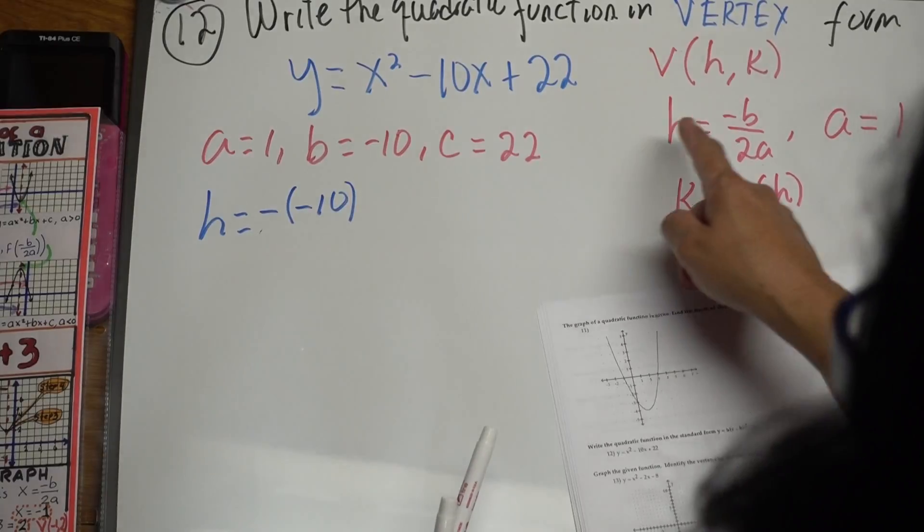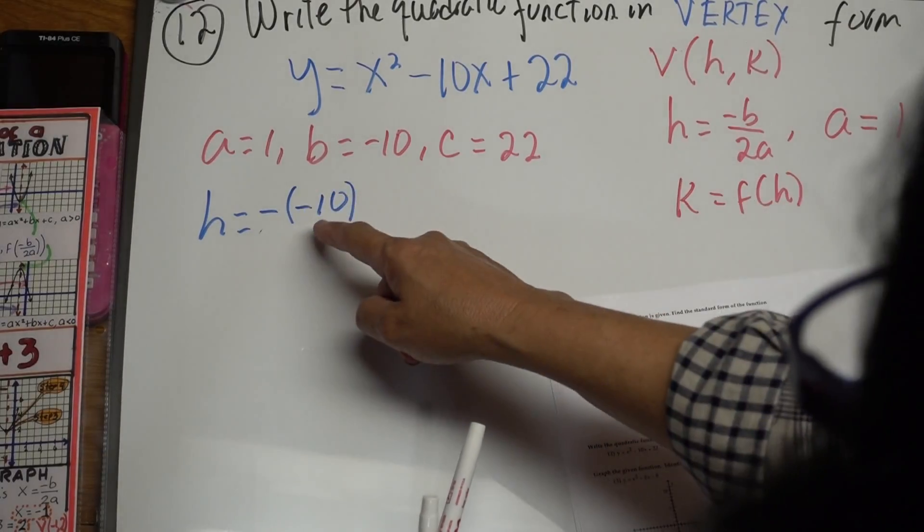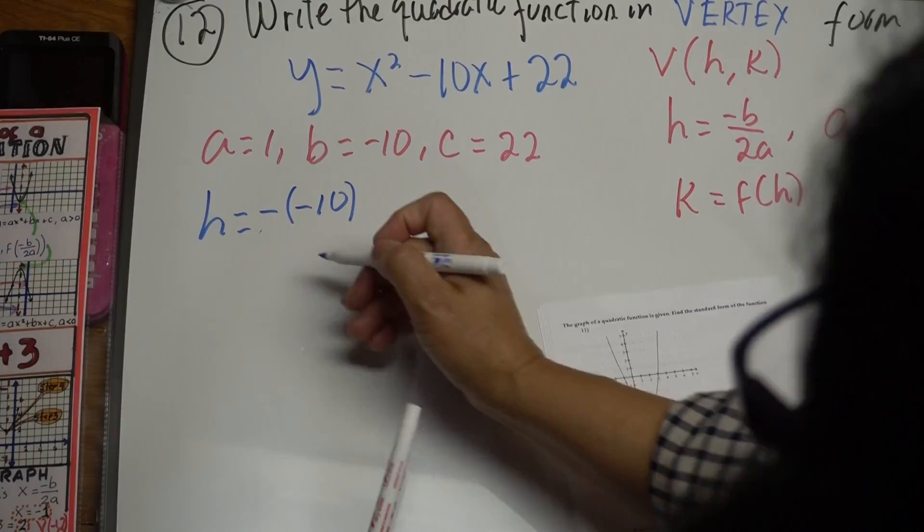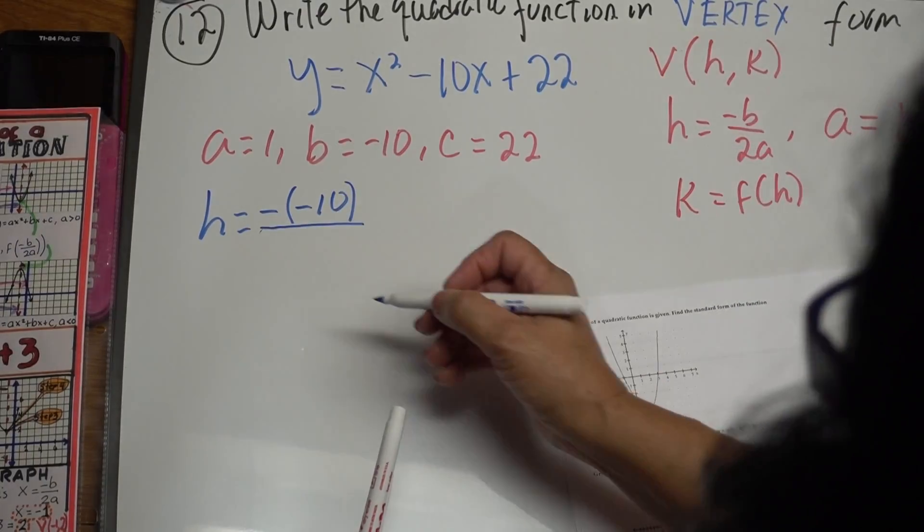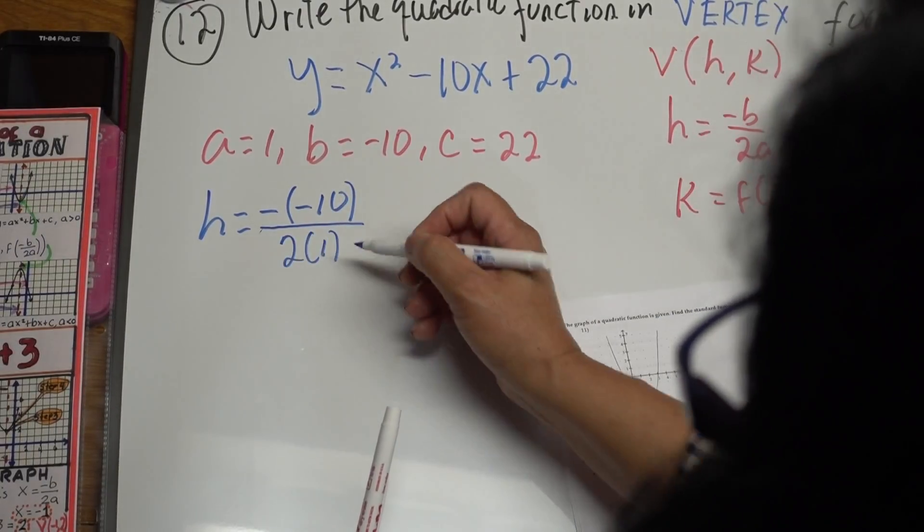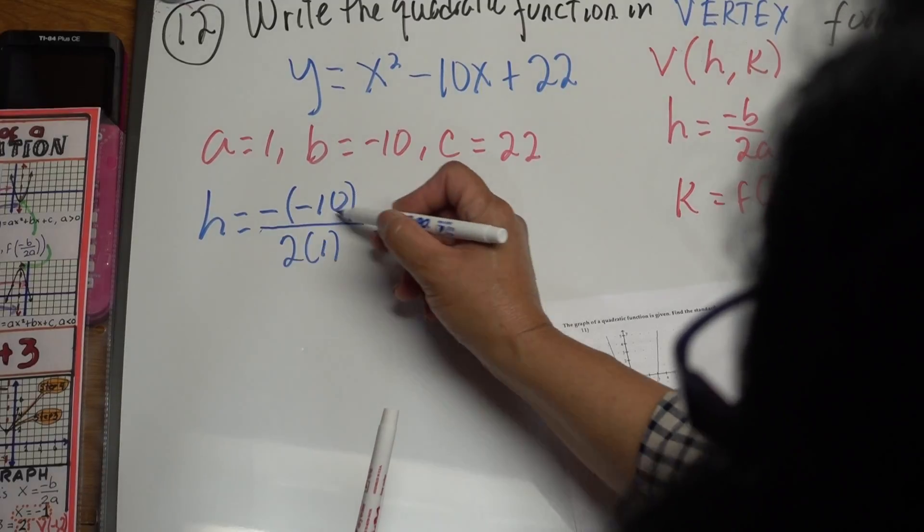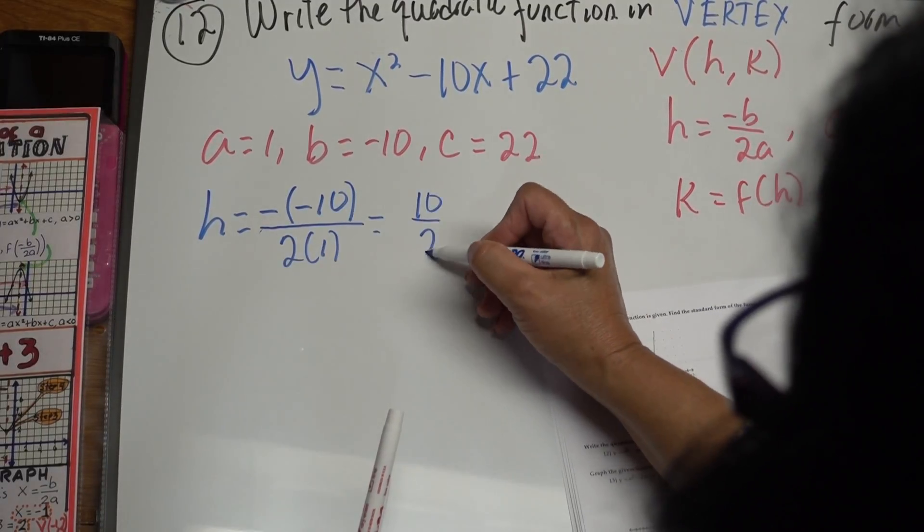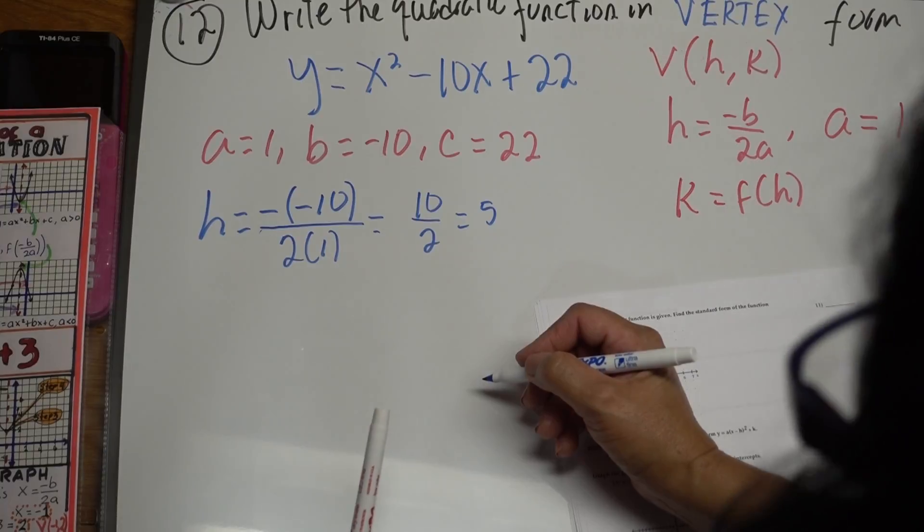Negative, this is the formula negative b, which is b is negative as well, over 2 times 1, because a is 1, and this gives me positive 10 over 2, which is 5. So h is 5.